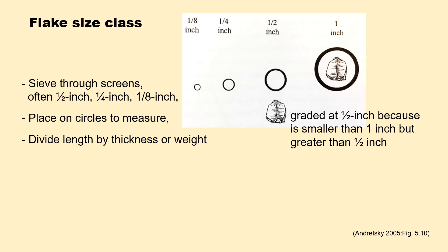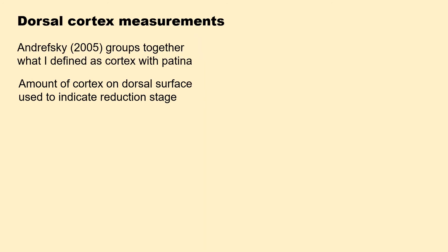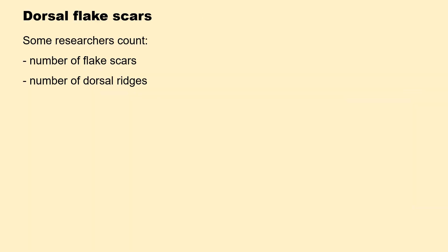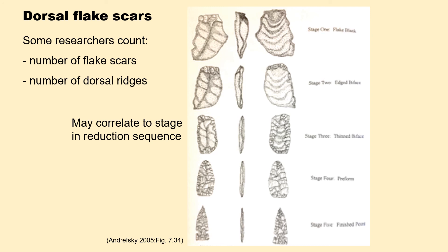In talking about dorsal cortex, Andreski appears to group together what I defined as cortex with patina. Regardless, the amount of cortex on a dorsal surface is used to indicate the reduction stage. You can express the amount of cortex as a percentage or simply as present/absent. Andreski scales the cortex into four ranks from zero — no dorsal cortex — to three, where the entire dorsal surface is covered in cortex, as shown in the bottom right photograph. Some researchers also examine dorsal flake scars — they might count the flake scars themselves or count the number of dorsal ridges left behind, as these may relate to the stage in the reduction sequence.